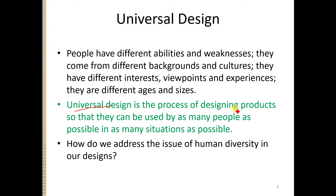Universal design is the process of designing products so that they can be used by as many people as possible. As we discussed, people come from different backgrounds and have different abilities, so we have to design our system or product so it can be used by as many people as possible, in as many situations as possible. For example, some systems can be used indoors but may not be convenient outdoors due to specific temperature or lighting requirements.